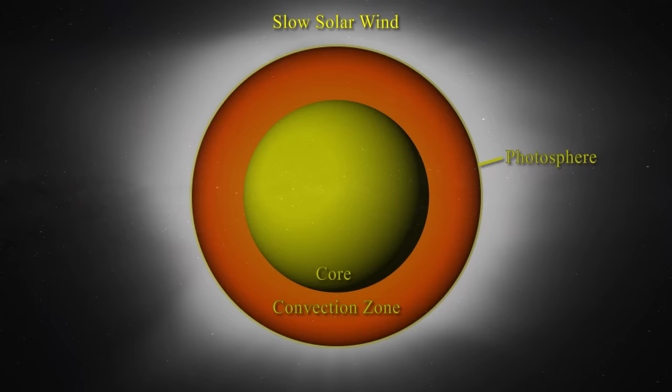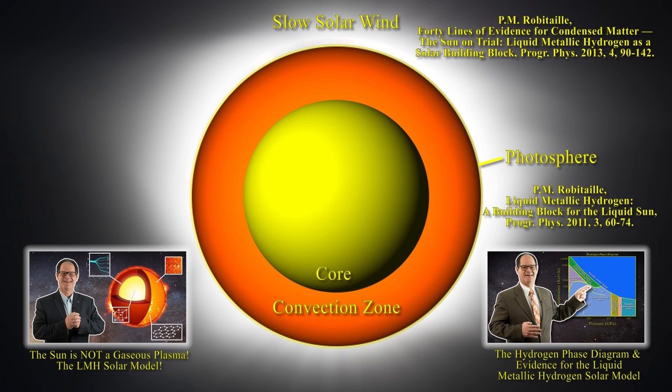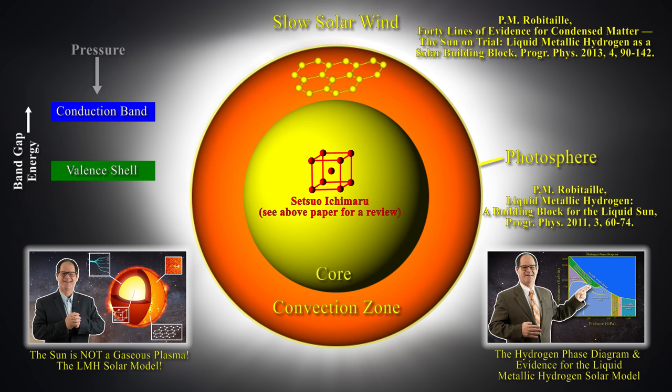How does this apply to the Sun? A real lattice exists in the metallic hydrogen solar model. Material is produced within the Sun where temperatures and pressures are elevated — these are the two critical parameters in synthesizing metallic hydrogen. At the core of the Sun, the structure should be body-centered cubic, as first proposed by Setsuo Ishimaru. But in the convection zone, it makes more sense that the lattice structure changes to hexagonal planar. Pressure acts to lower the band gap separating the valence shell and the conduction band, while elevated temperatures facilitate the entry of valence electrons into the conduction band. Thus the interior of the Sun is perfectly suited to make fully metallic hydrogen — body-centered cubic at the core, becoming hexagonal type 2 in the convection zone just below the photosphere.